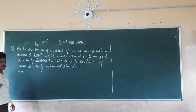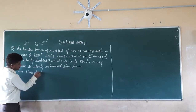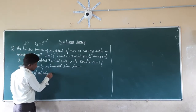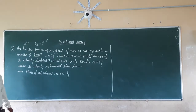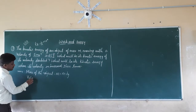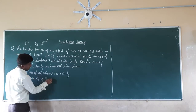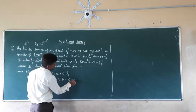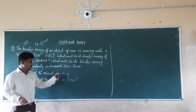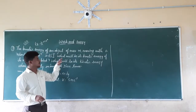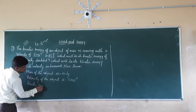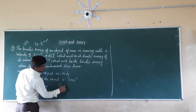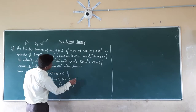Let us write the given data. The mass of the object is m kg — we don't know the exact mass, so we denote it as m kg. The velocity of the object is v = 5 meters per second. When the object of mass m kg moves at 5 m/s, it acquires a kinetic energy of 25 joules. So EK = 25 joules.